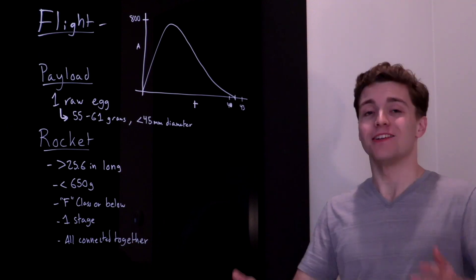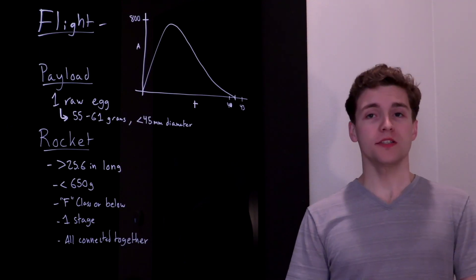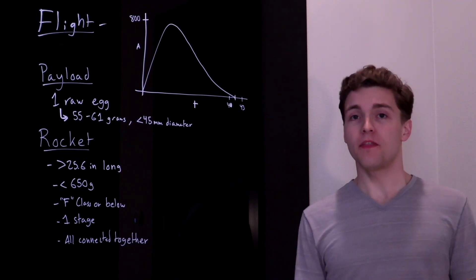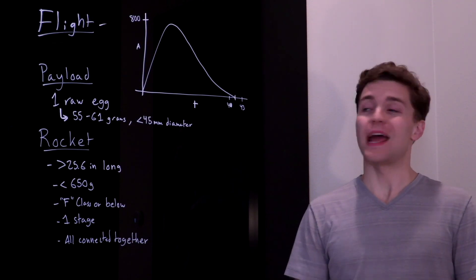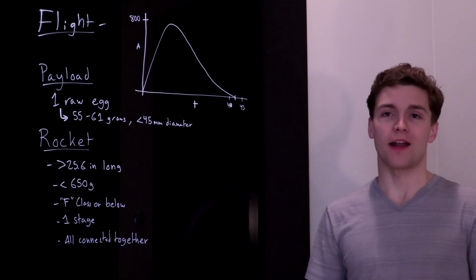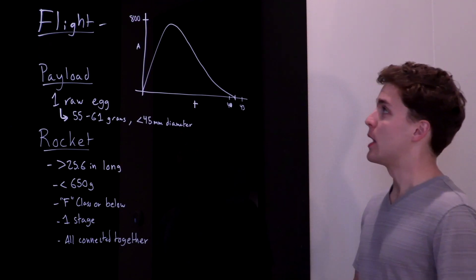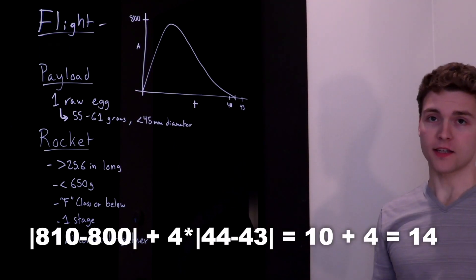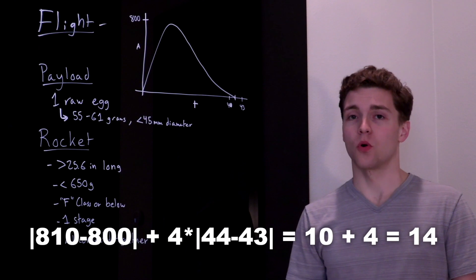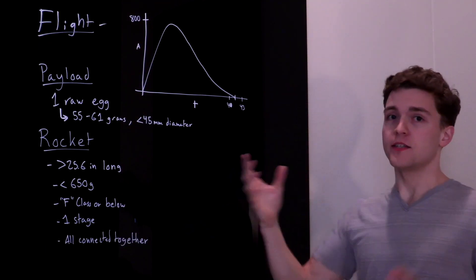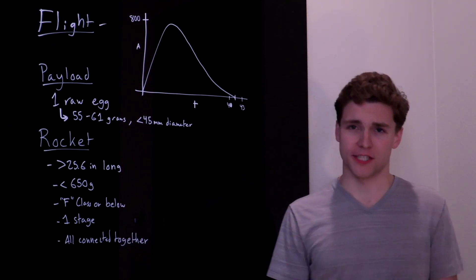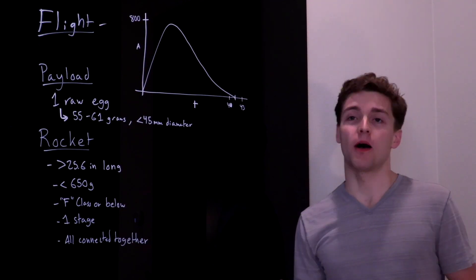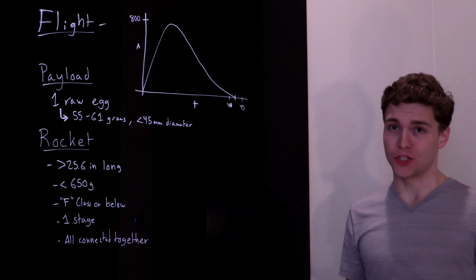Points can also be added through our flight duration score. This year's flight duration goal is 40 to 43 seconds. If we're within that range, no points are added, but every second that we're outside of that range, four points are added to our flight score. So if we fly to 810 feet and have a flight duration of 44 seconds, that would be a total flight score of 14 points. This is why TARC is all about precision — you need to be as precise as possible in your altitude and your total flight duration.